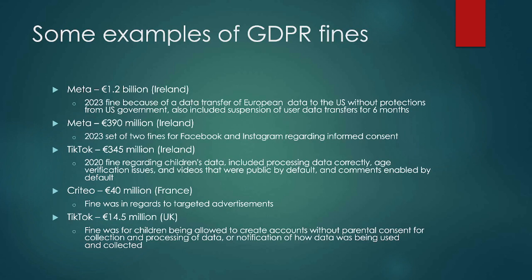Any business in the EU or that has information about EU citizens falls under GDPR. The fines are a very costly way of penalizing companies — flexible and scalable, done by percentages of income so that it's painful regardless of company size. Some examples: Meta got hit in Ireland with a 1.2 billion dollar fine for data transfer of European data to the US without protection, and a 390 million dollar fine for informed consent violations on Facebook and Instagram.